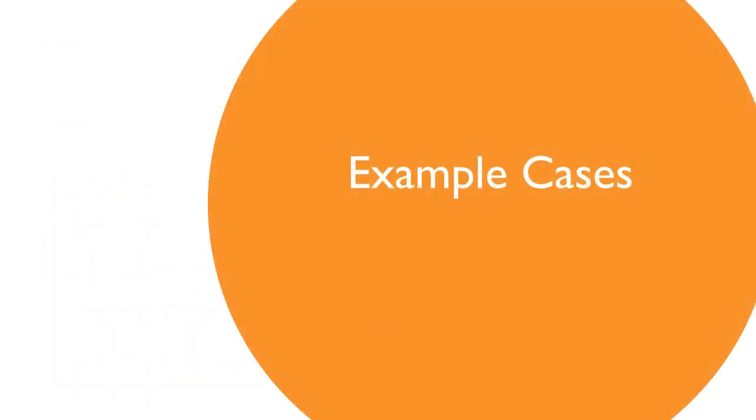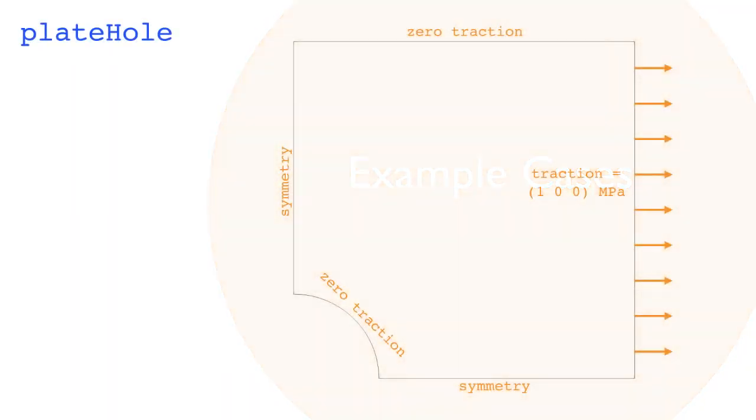Let's look at some example cases. I've taken a relatively simple one, the one that we looked at in the original OpenFOAM paper, just a plate with a hole in it. I've taken a simplified version where I just have a traction of one megapascal applied to the right. Symmetry planes, no traction here, and no traction here.